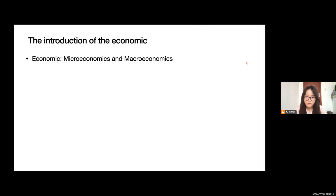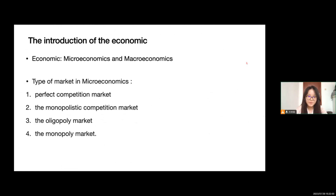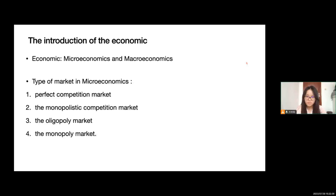Economics has two parts: microeconomics and macroeconomics. There are some types of markets in microeconomics. First is the perfect competition market. Second is the monopolistic competition market. Third is the oligopoly market. And the last one is the monopoly market. According to my own knowledge about microeconomics, I think the most important markets are the oligopoly market and the monopoly market.